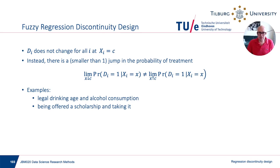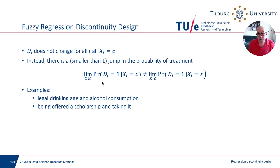This brings us to the fuzzy regression discontinuity design. In the sharp design, di changed from 0 to 1 when x crossed the threshold little c. Instead, in the fuzzy design we have a jump or discontinuity in the probability of treatment, but it is not necessarily from 0 to 1. Examples include legal drinking age and alcohol consumption: when people become eligible to drink, not everyone starts immediately, and not everyone was abstaining before — but there is a discontinuity in that probability.